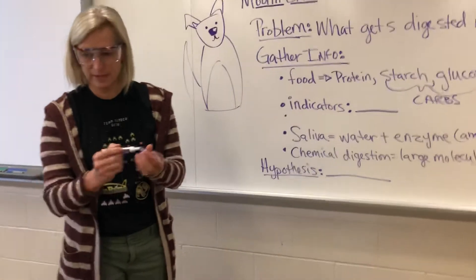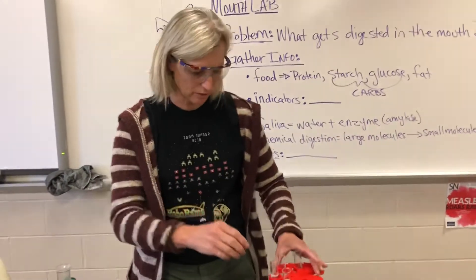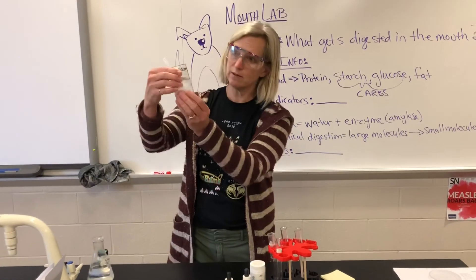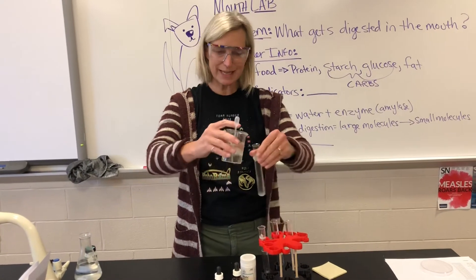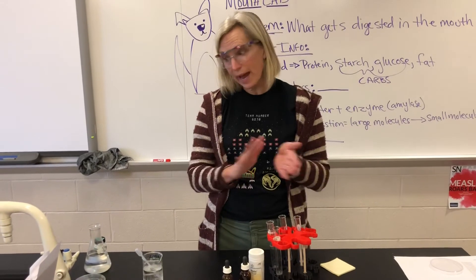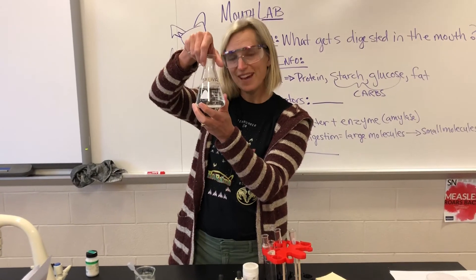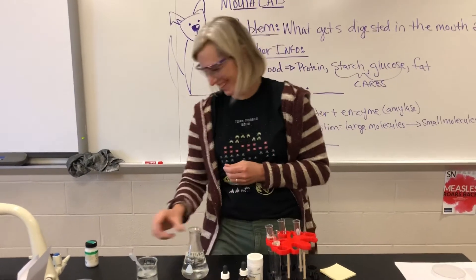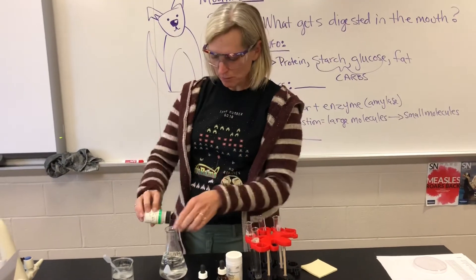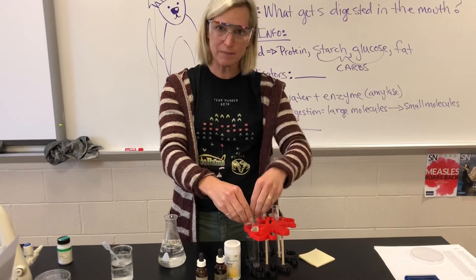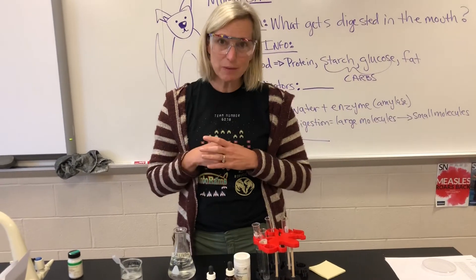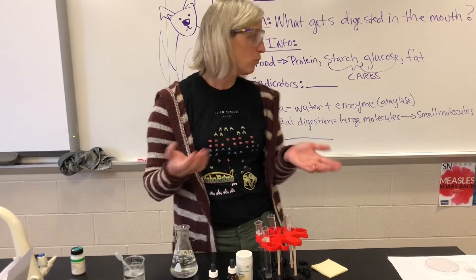In terms of how to set up the test, we're going to set up an experimental and a control for each food type. For example, with a starch solution I'd put starch in each of two tubes. We actually use an enzyme called diastase — we add a little to one tube and not the other. So your experimental would have the saliva enzyme and your control would just have water, then we test them with indicators to see if digestion occurred.